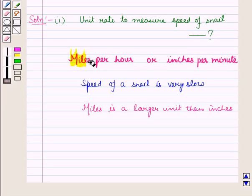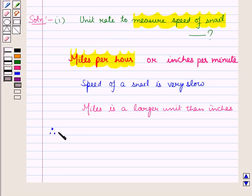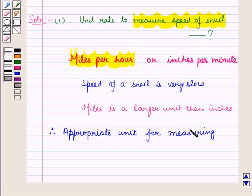miles per hour is not an appropriate unit for measuring speed of a snail. Therefore, the appropriate unit for measuring speed of a snail is inches per minute.